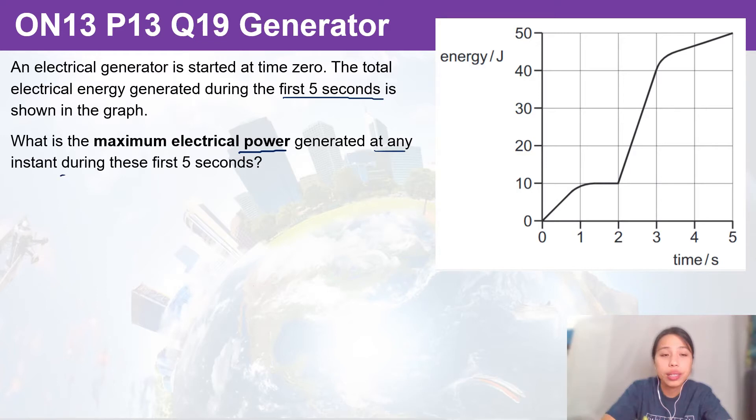At any point along these five seconds, how do we find power from an E-t graph? Remember I talked about how power is a change of energy released over a unit of time.